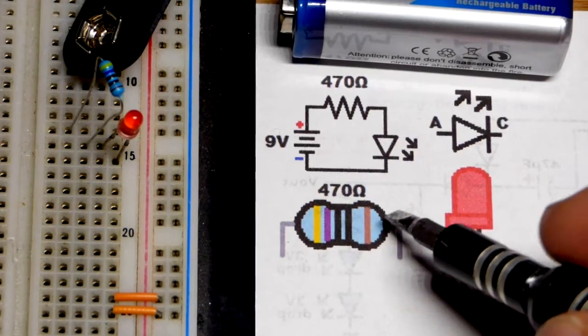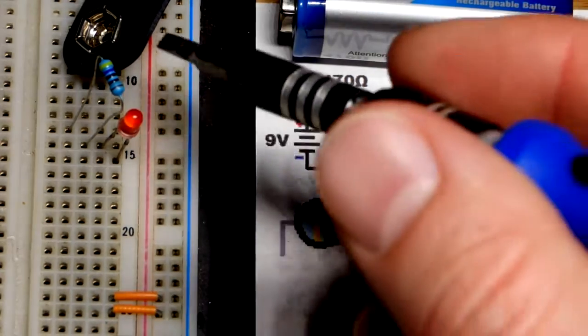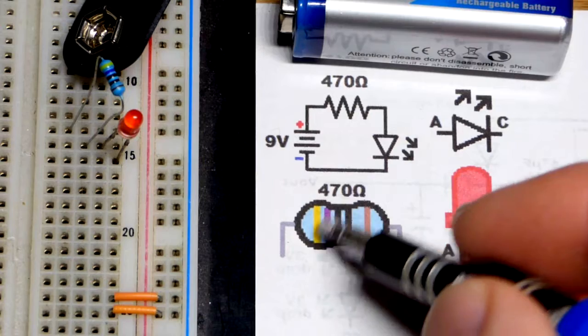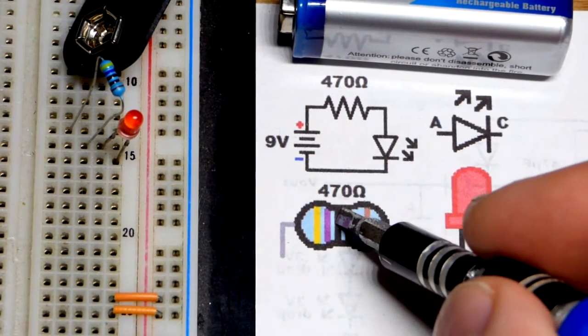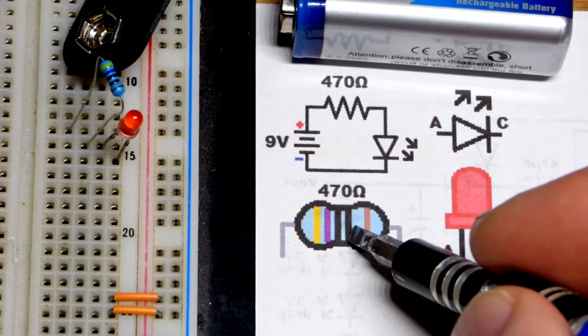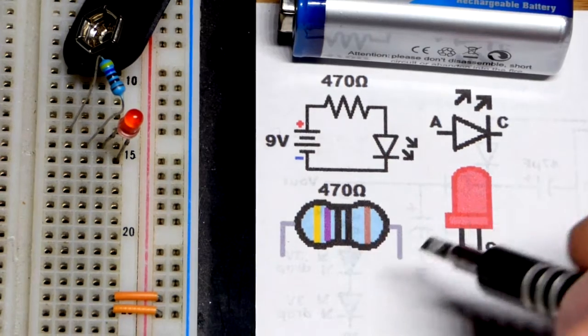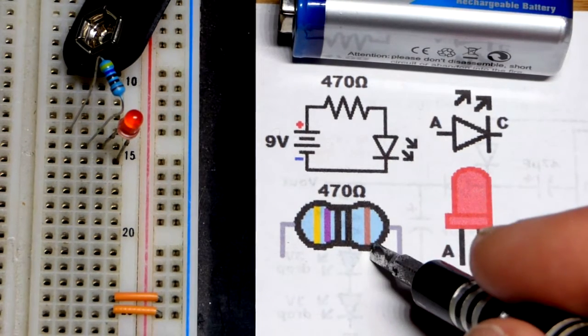We're using a 470 ohm resistor. The yellow band, as you can see up there, stands for 4, violet is 7, and then black is 0. We got another band here for how many zeros are after that, which is zero, so no more zeros.